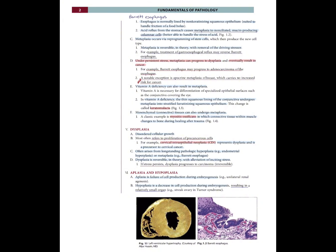Dysplasia — disordered cellular growth — most often refers to proliferation of precancerous cells. For example, cervical intraepithelial neoplasia represents dysplasia and is a precursor to cervical cancer. Dysplasia often arises from long-standing pathologic hyperplasia — for example, endometrial hyperplasia — or metaplasia — for example, Barrett's esophagus. Dysplasia is reversible in theory with alleviation of the inciting stress. If stress persists, dysplasia progresses to carcinoma, which becomes irreversible.